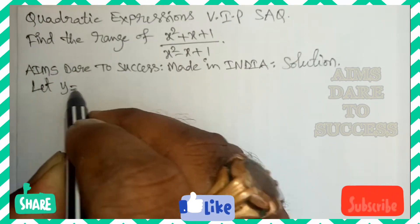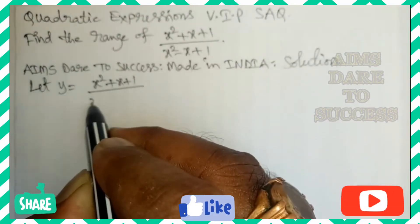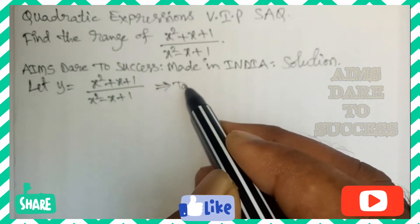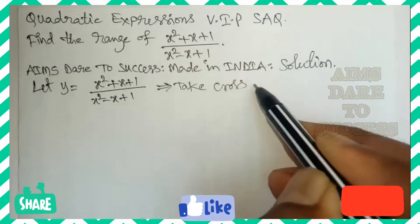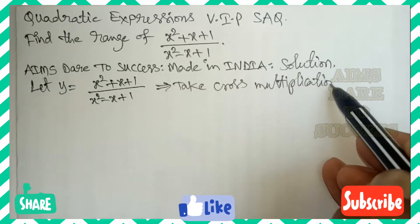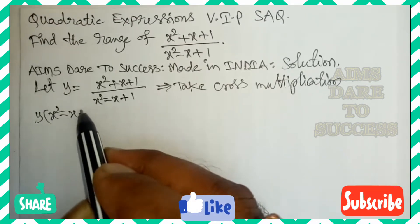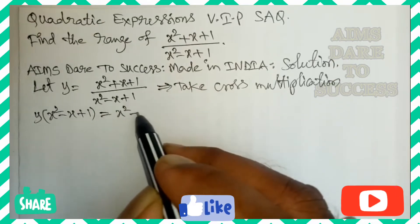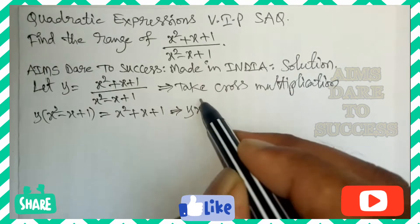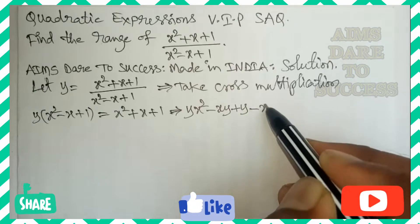Let y = (x² + x + 1) / (x² - x + 1). Taking cross multiplication, we get y(x² - x + 1) = x² + x + 1. Expanding the left side: y·x² - x·y + y = x² + x + 1.